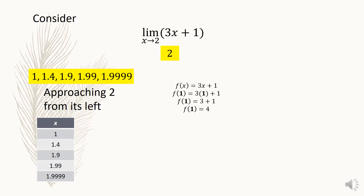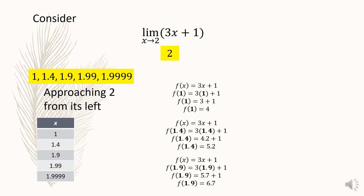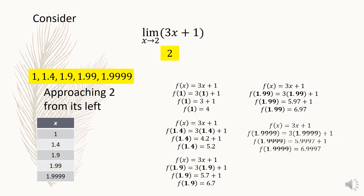If x is 1.4, f of 1.4 is 5.2. If x is equal to 1.9, f of 1.9 is 6.7. If x is equal to 1.99, f of 1.99 is 6.97. If x is 1.9999, f of 1.9999 is 6.9997. These are the corresponding values of y, or f of x.